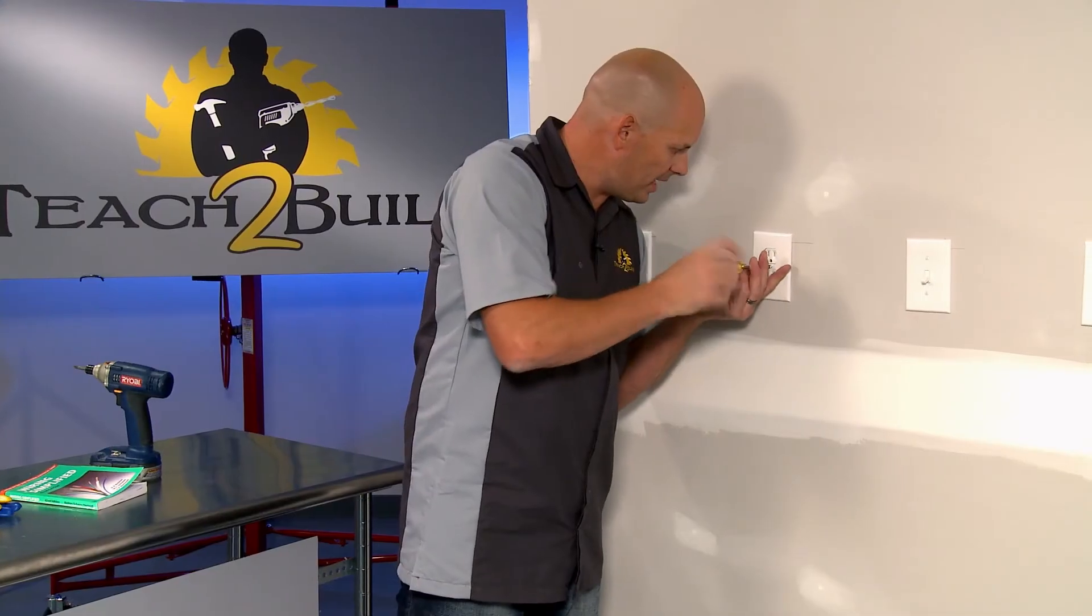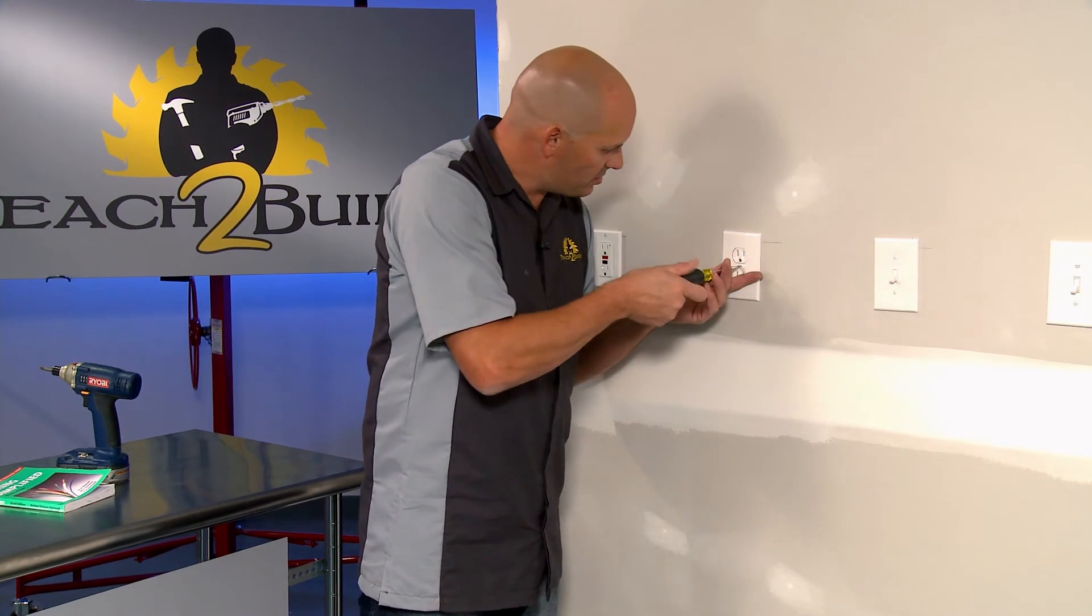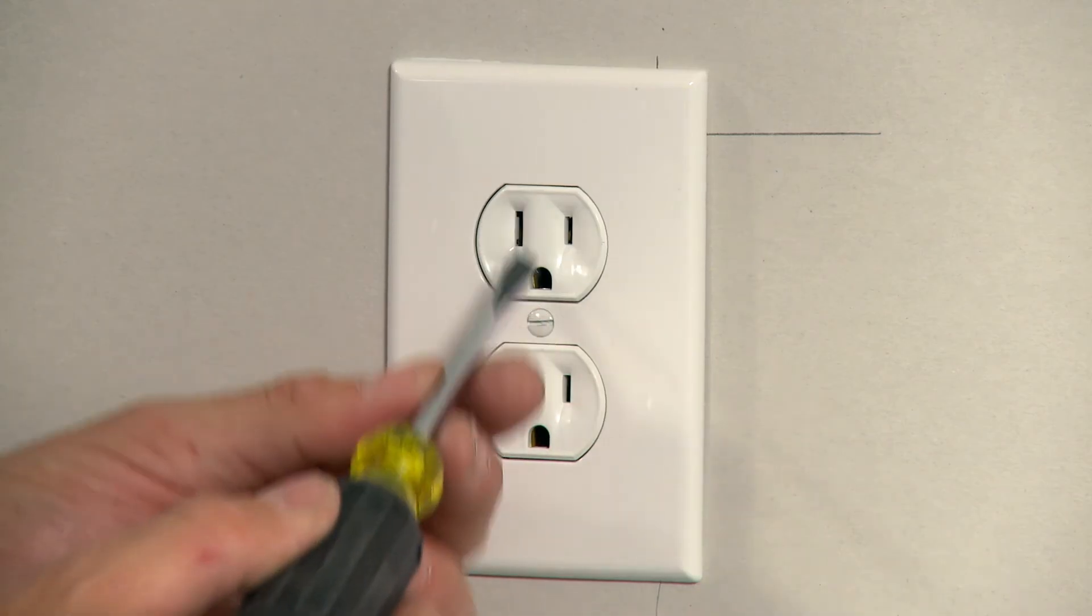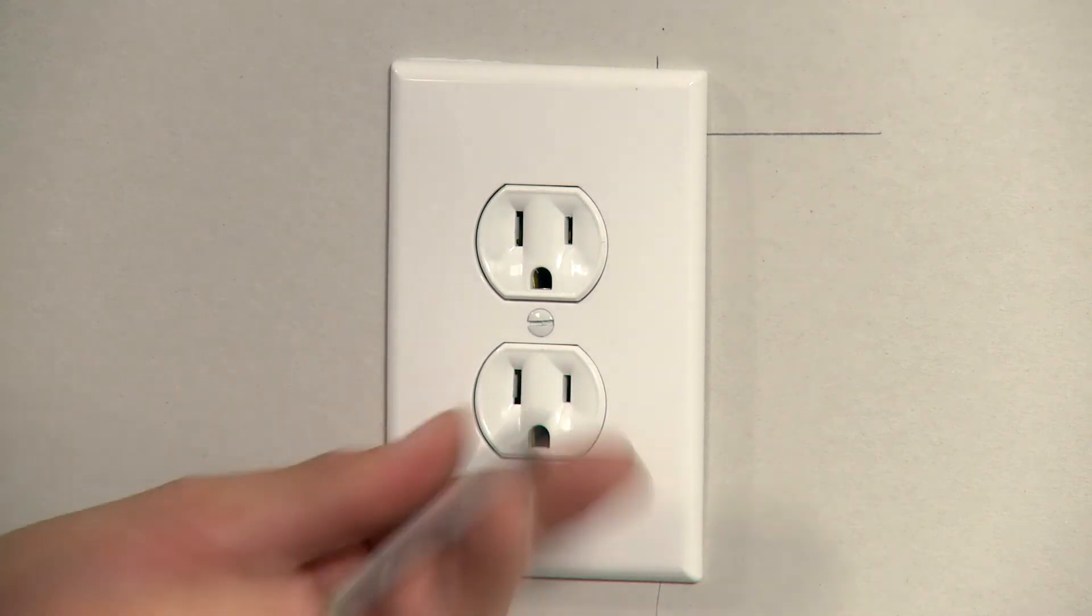I get this question all the time, by the way, now that I'm standing here looking at it. Does the ground hole go on the top like this or on the bottom like it is here?